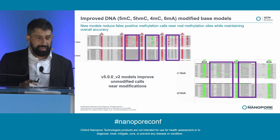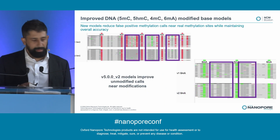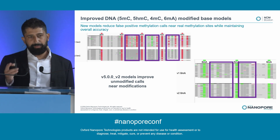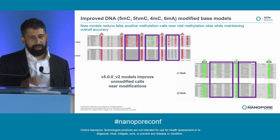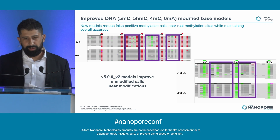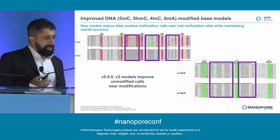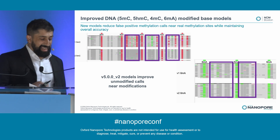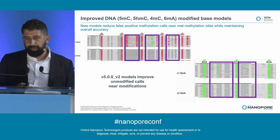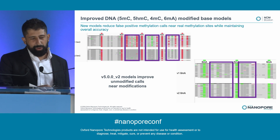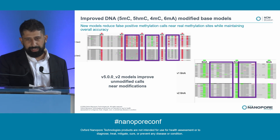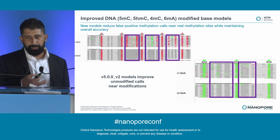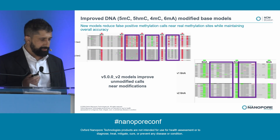We've made advancements in DNA mod base accuracy. We identified a subtle issue where, in the neighborhood of methylation, there was a slightly higher likelihood of incorrectly calling a methylated base. The effect was not substantial enough to affect headline accuracy, but we've made an improvement. If you've got existing mod call data, it may not be worth re-calling for such a subtle improvement — but if you're wondering what the V2 models are about, they primarily fix this issue in DNA.